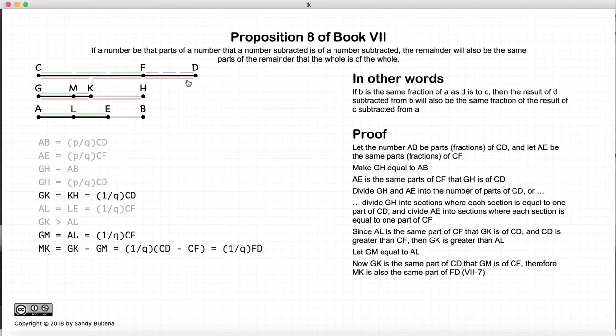GK minus CF is equal to FD. GK minus GM is equal to MK. So we have that MK is the same fraction of FD as GK is of CD.